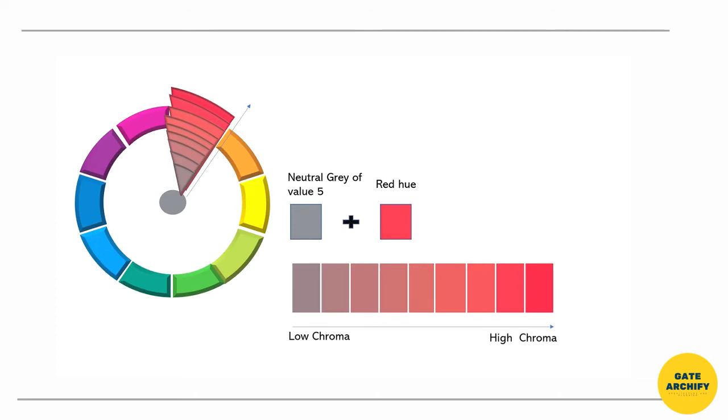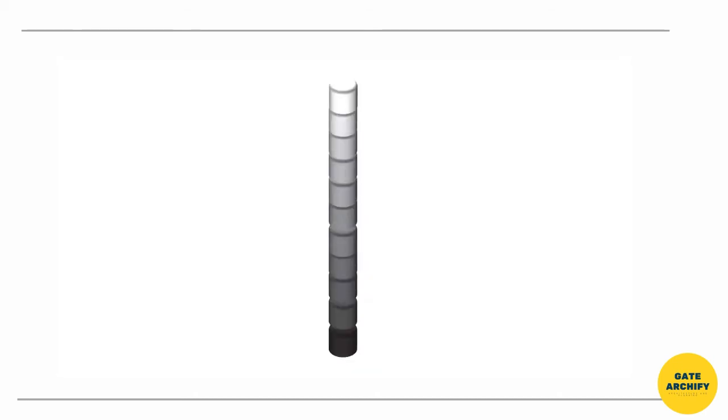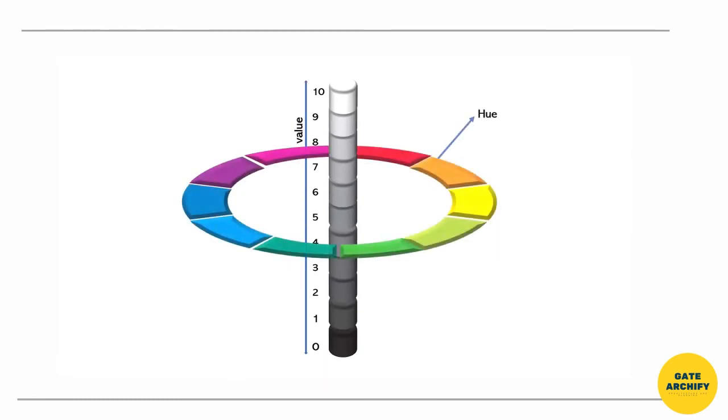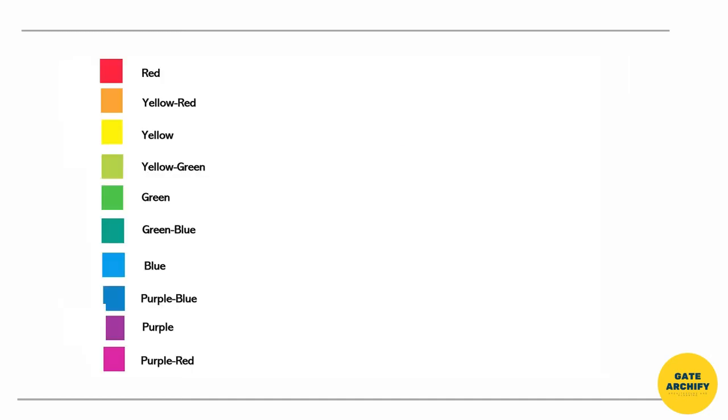Let's put the three dimensions together. Value is the vertical axis, hue is the horizontal axis, and chroma extends radially outward. Now we'll understand how to read the charts and notations. Five hues are standard and five are combinations. Each is further divided into 10 hues for a total of 100 hues.